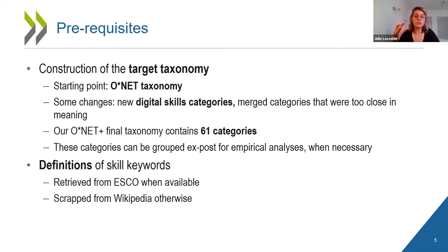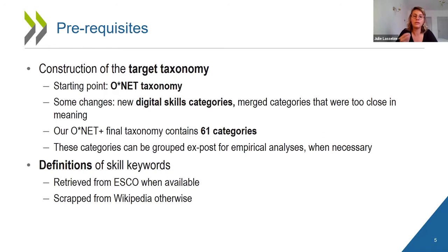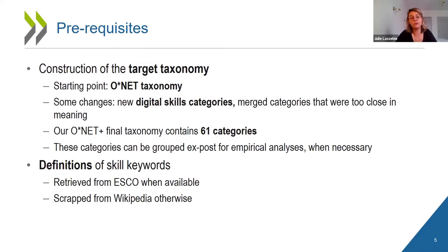The second prerequisite is to get the definitions for each skill keyword in the Burning Glass data, since the machine learning algorithm classifies skills based on their meaning. We need definitions for all 17,000 skill keywords. We retrieve these definitions from ESCO when available — ESCO is the European equivalent of ONET and has the advantage of containing definitions of several skills. When we cannot retrieve a definition from ESCO, we scrape it from Wikipedia.